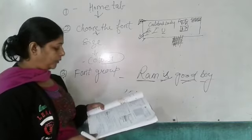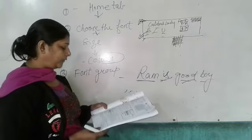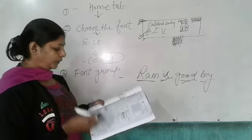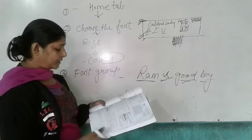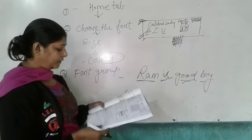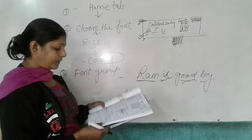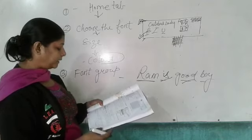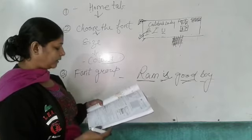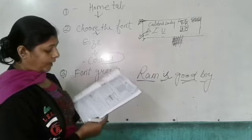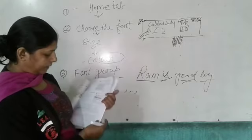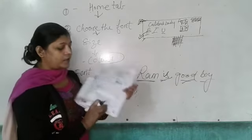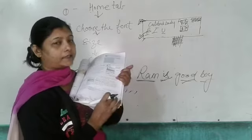Do you know what would happen if you click the arrow? See the red circle in Figure 6.6 in the bottom right-hand corner of the font group. Here you can see Figure 6.6 and the red circle.